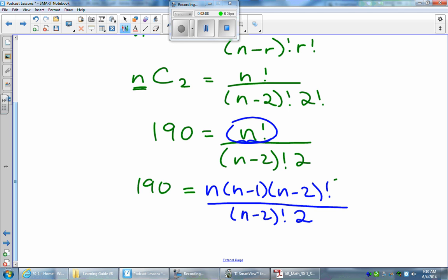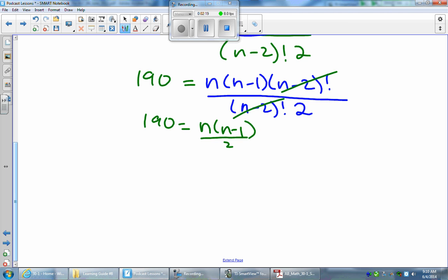Once I can, it's going to be very nice, well, better to look at here. I have 190 equals N times N minus 1 all over 2. So my equation no longer has those factorials.